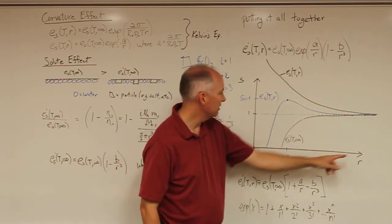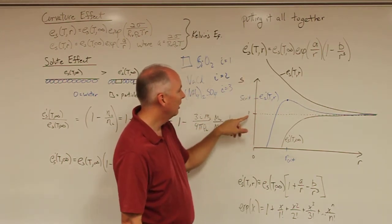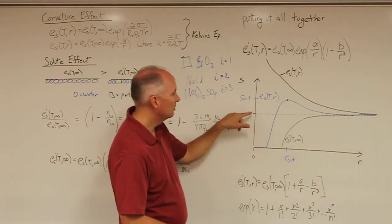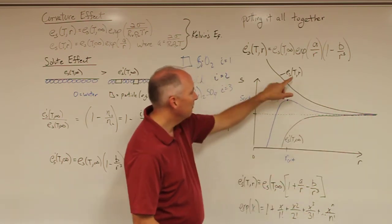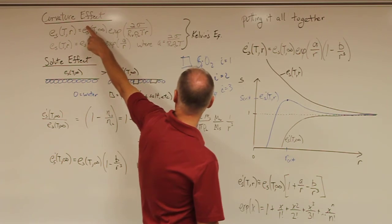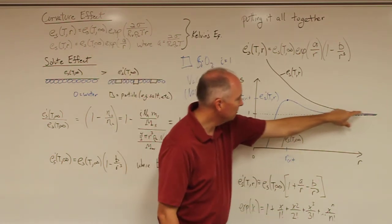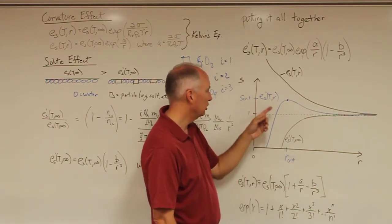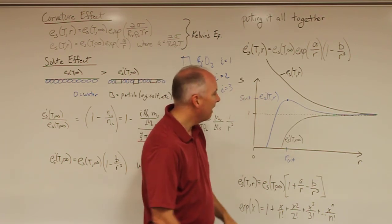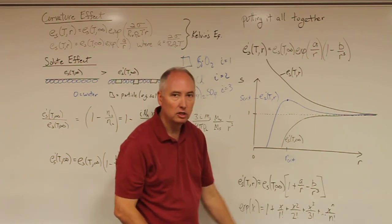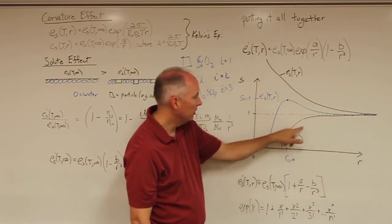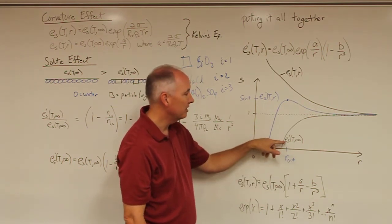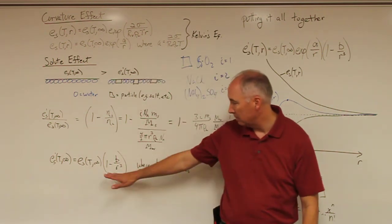To look at this graphically, we have r on the x-axis and the saturation ratio on the y-axis, where a saturation ratio of 1 is equal to a relative humidity of 100%. E sub s of T of r, which is our curvature effect — Kelvin's equation — is basically an exponential function that asymptotes out at a saturation ratio of 1. Then we have the solute effect, which always reduces the critical saturation ratio at equilibrium, given by E sub s prime of T of infinity.